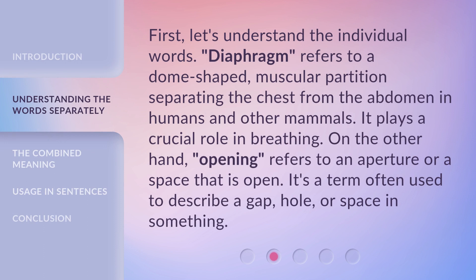First, let's understand the individual words. Diaphragm refers to a dome-shaped muscular partition separating the chest from the abdomen in humans and other mammals. It plays a crucial role in breathing.